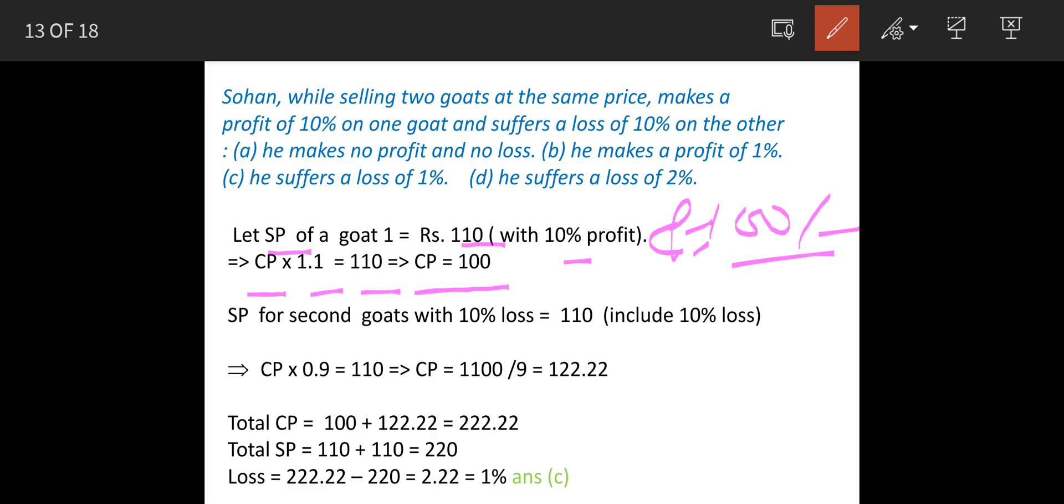Now for the second goat, it is 110 rupees again, but here there is a loss of 10%. So this becomes CP × 0.9 because of this 10% loss. We have made this as 90% of the cost price. So CP × 0.9 = 110, therefore CP is 122.22.